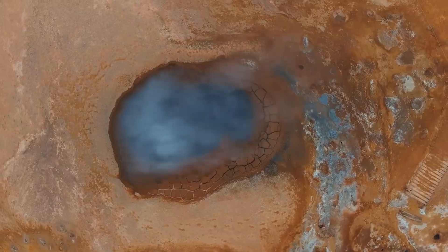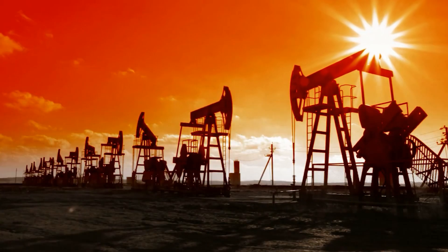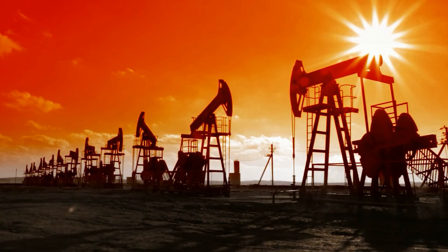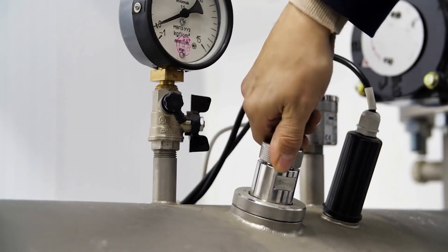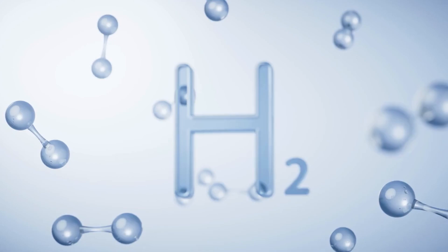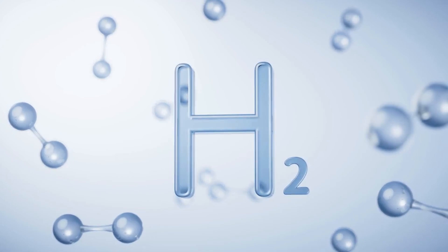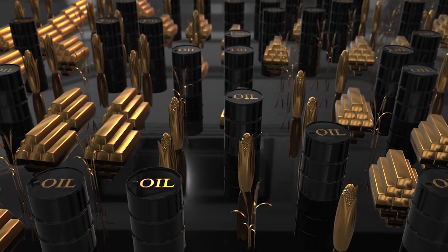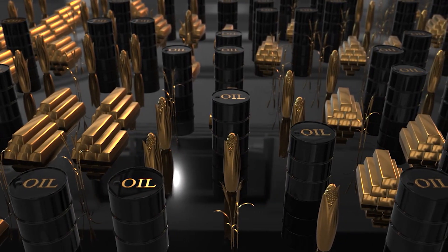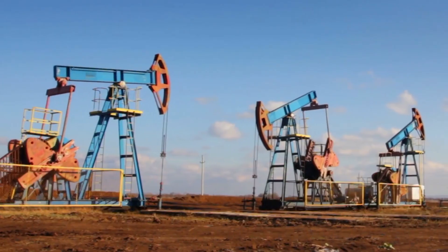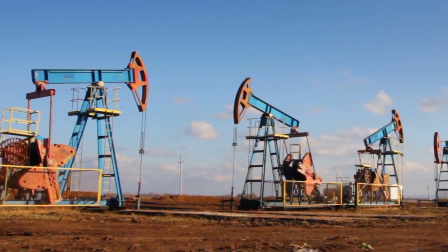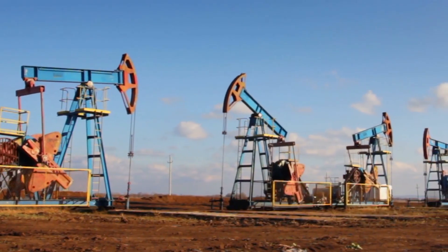The amount of heat and pressure determines whether oil, gas, or both are formed, and also affects the quality and type of hydrocarbons produced. For instance, higher pressures can result in lighter, more volatile hydrocarbons, while lower pressures produce heavier oils. The precise combination of heat, pressure, and time is crucial for the successful creation of oil and gas reserves.